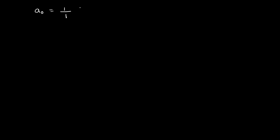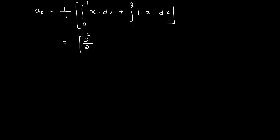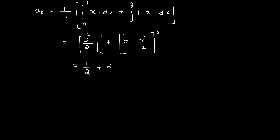a₀ is equal to 1 by 1 times the integral from 0 to 1 of x dx plus the integral from 1 to 2 of (1 minus x) dx. That is equal to x integrated as x² by 2, delimited 0 to 1, plus (1 minus x) integrated, giving x minus x² by 2 from 1 to 2. That equals 1 by 2 plus (2 minus 4 by 2) minus (1 minus 1 by 2), which simplifies to 1 minus 1 by 2.